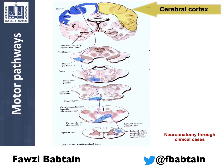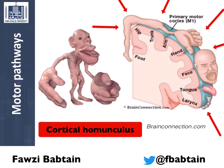Let's now look at the cerebral cortex in more detail. You can see the cortical homunculus, which has a big representation of the face and the hands.